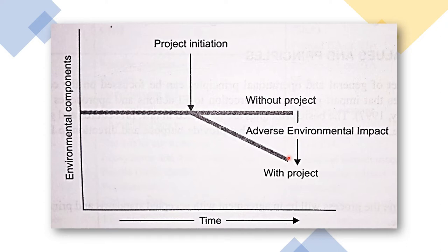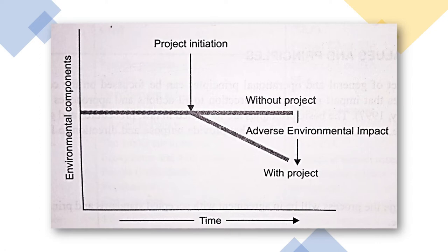This triangle represents the impacts of the project. These impacts must be reduced — either by changing certain steps of the project, using mitigation measures, or providing corporate social responsibility measures such as employment, schools, colleges, universities, townships, or clean water availability in the area, depending on what kind of impacts the project has.